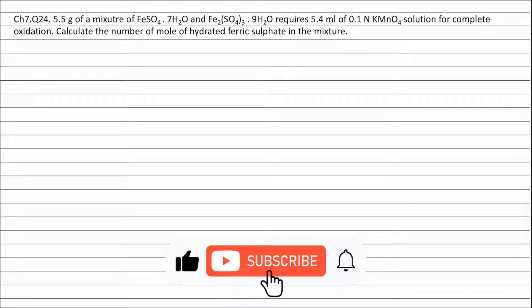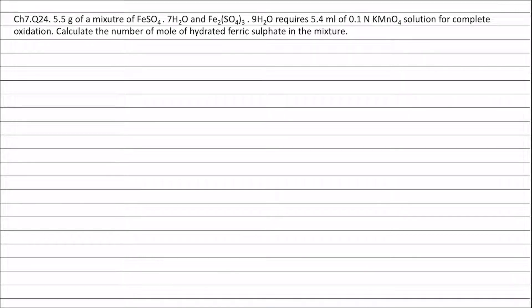Question 24. 5.5 grams of a mixture of FeSO4·7H2O and Fe2(SO4)3·9H2O requires 5.4 milliliters of 0.1N KMnO4 solution for complete oxidation. Calculate the number of moles of hydrated ferric sulfate in the mixture.